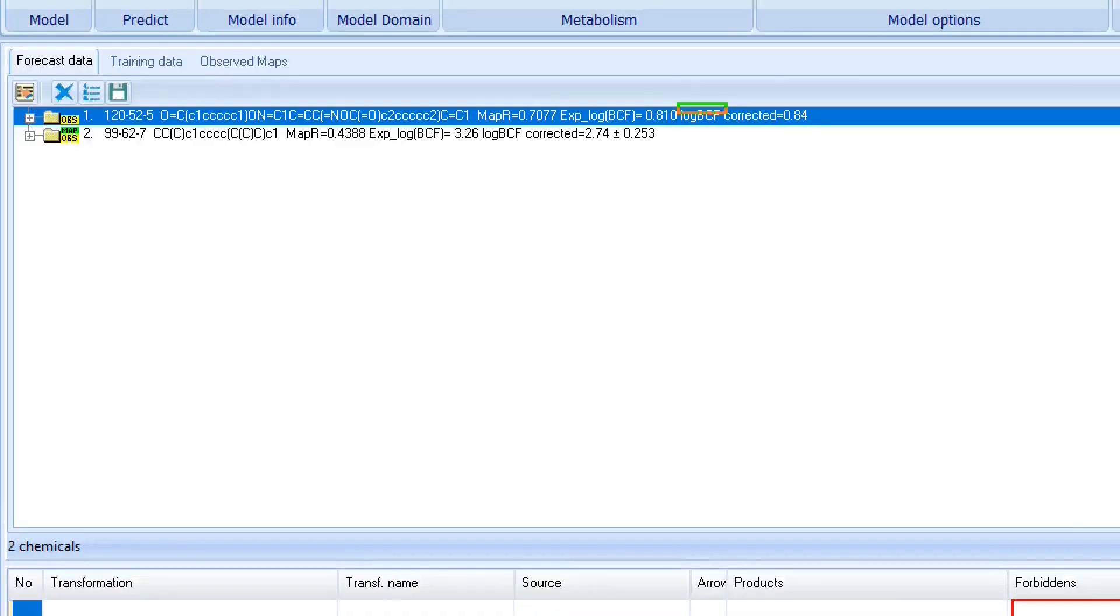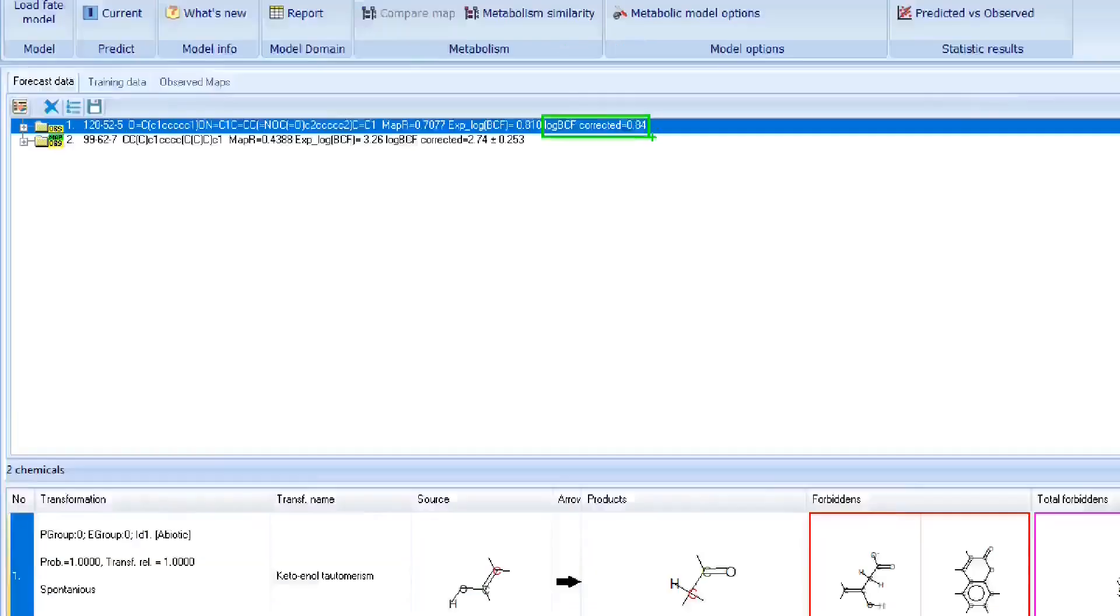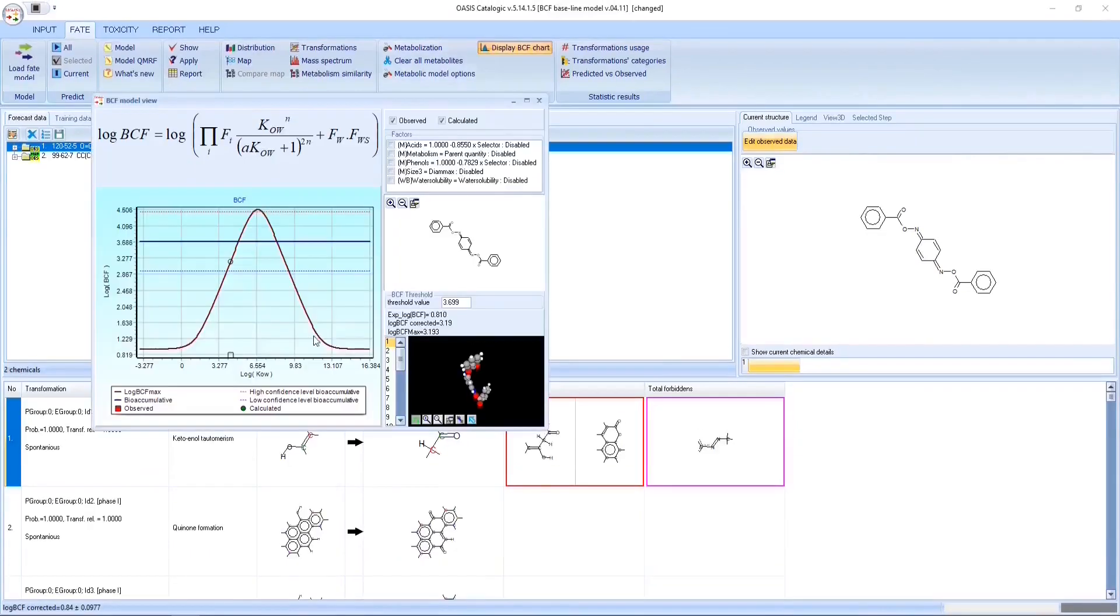The BCF Baseline model predicts the bioconcentration factor in fish. The prediction is based on the maximum bioconcentration potential of the chemicals driven by the lipophilicity only.